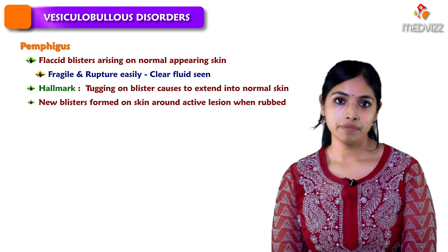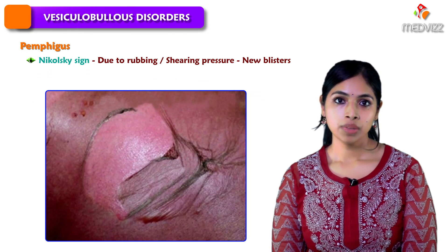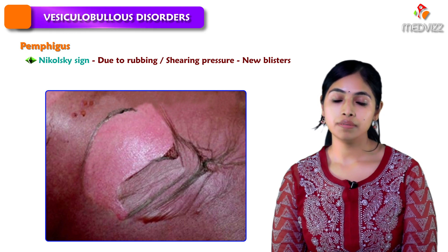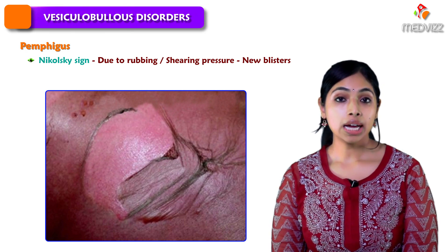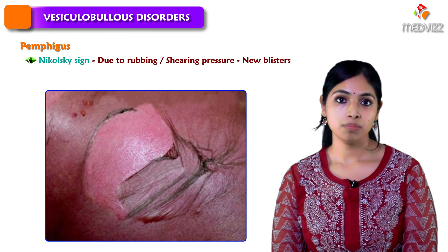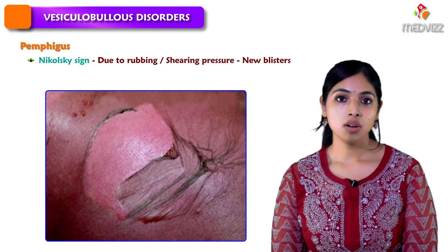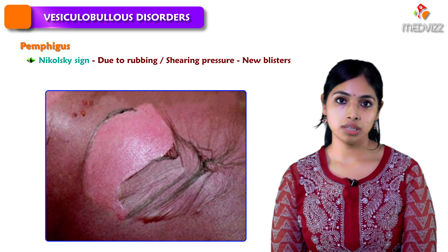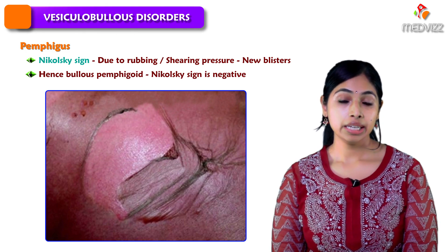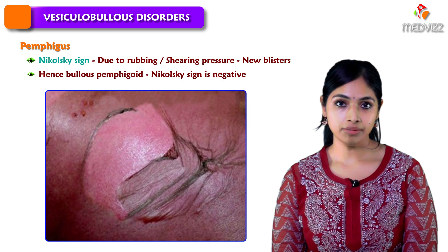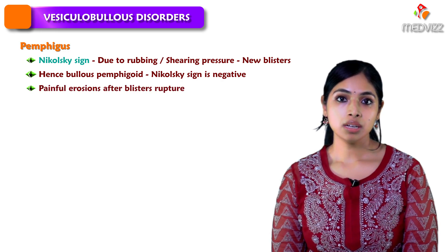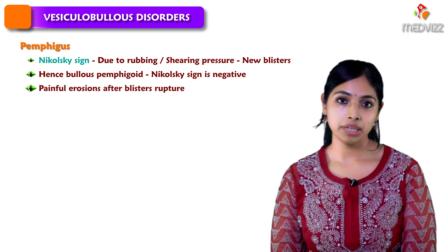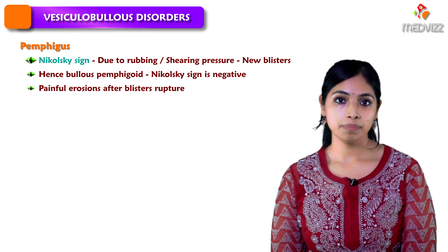A classic sign of Pemphigus is called the Nikolsky sign, in which rubbing or applying shearing pressure on a bony prominence away from the active lesion on uninvolved skin produces new blisters. This is the hallmark of Pemphigus and often differentiates it from disorders such as bullous Pemphigoid, in which the Nikolsky sign is negative. The erosions are often painful and cause quite significant discomfort to the patient.